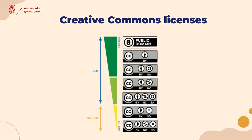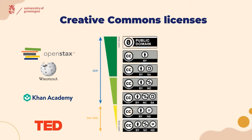These permissions in OER are enabled by using open licenses. Creative Commons licenses are the most widely used type of open licenses — they consist of several elements that can be remixed to create specific licenses. By using these licenses, the author indicates what is and is not allowed with their resource. Many everyday teaching resources are actually licensed with Creative Commons licenses, like OpenStax textbooks, Wikipedia, Khan Academy, and TED videos.